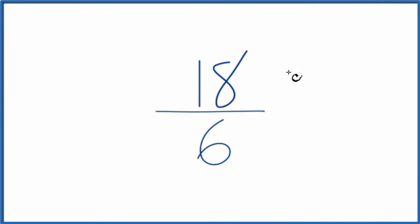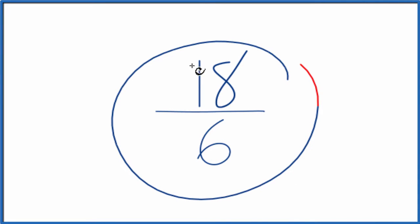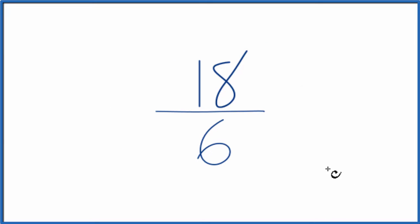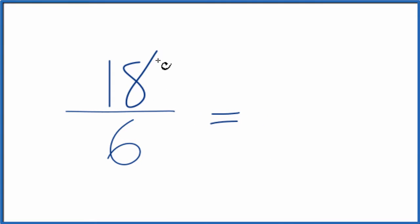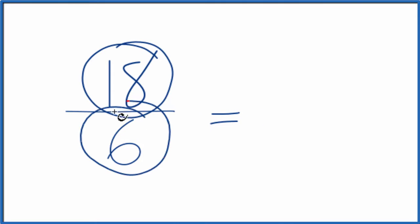If you're asked to simplify the fraction 18 over 6, here's how you do it. What we want to do is find another fraction that's equivalent to 18 over 6 — it has the same value, just simplified or reduced down to lowest terms. To do that, we need to find a common factor, something that goes into 18 and 6 evenly. We're looking for the greatest common factor.